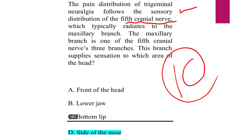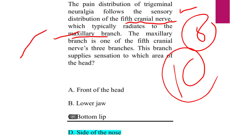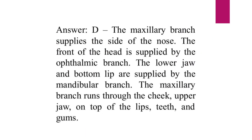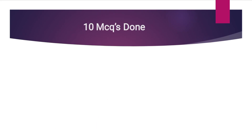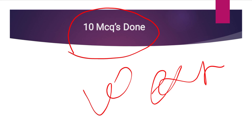MCQ #10: The pain distribution of trigeminal neuralgia follows the sensory distribution of the fifth cranial nerve, which typically radiates to the maxillary branch. The trigeminal nerve has three divisions: ophthalmic, maxillary, and mandibular. The maxillary branch supplies sensation to the side of the nose, cheek, upper jaw, top lip, teeth, and gums. The front of the head is supplied by the ophthalmic branch. The lower jaw and bottom lip are supplied by the mandibular branch. That concludes all 10 MCQs with complete explanation.